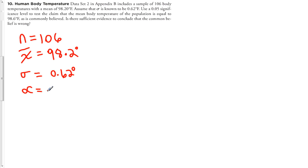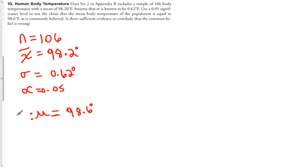We use a 0.05 significance level, so alpha equals 0.05. The claim is that the mean body temperature of the population is equal to 98.6 degrees. This is the null hypothesis because it contains equality. The alternative hypothesis is that mu does not equal 98.6 degrees — making this a two-tailed test.